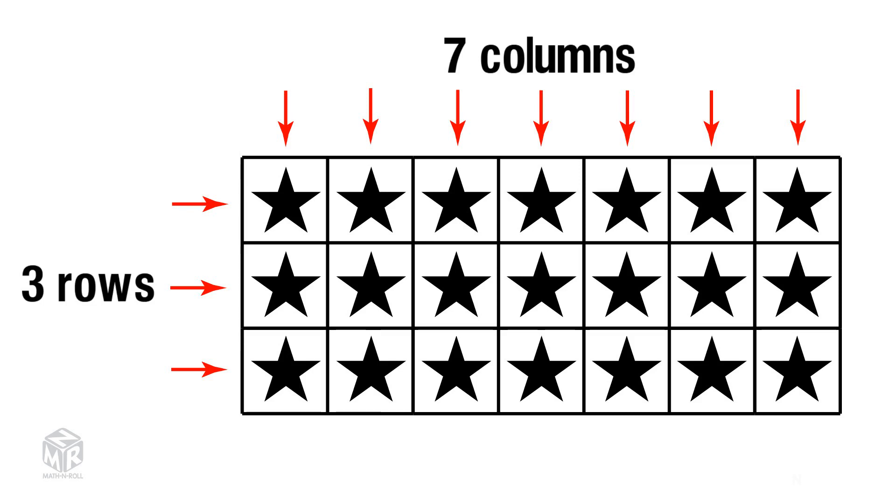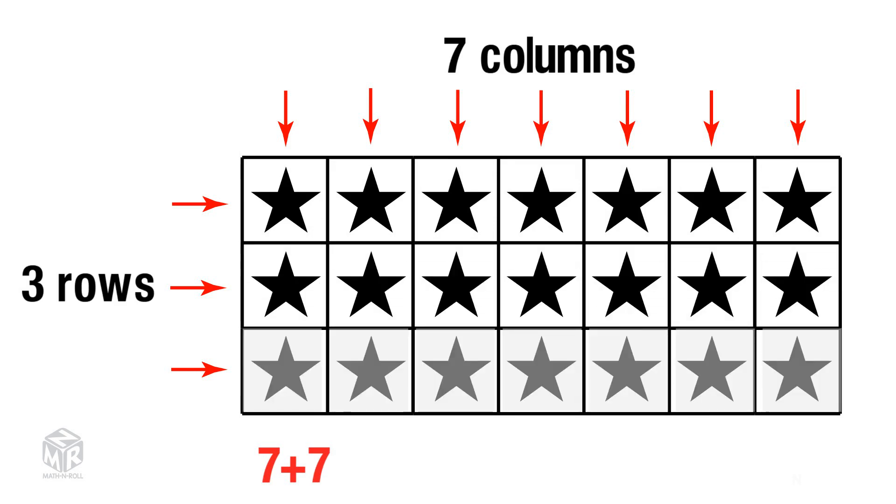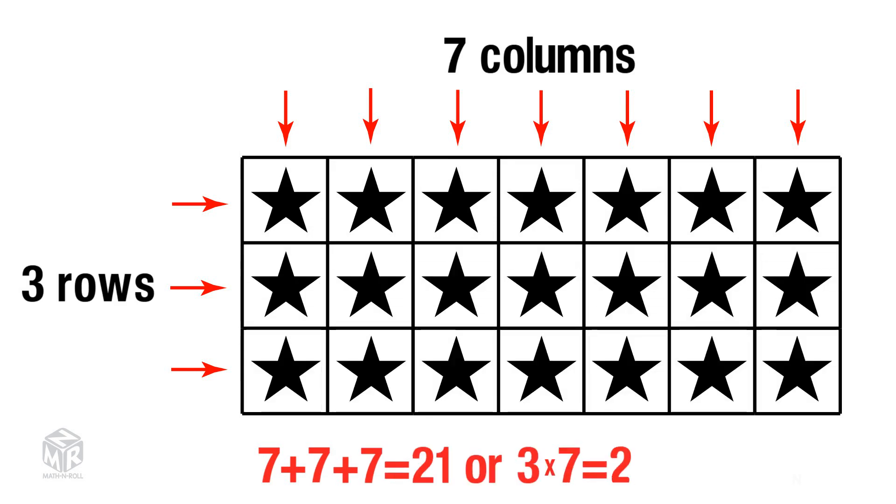We use arrays to help us multiply. Multiplication means putting equal groups together to get a total, or a product. We can say 7 plus 7 plus 7 equals 21, or we can say 3 times 7 equals 21.